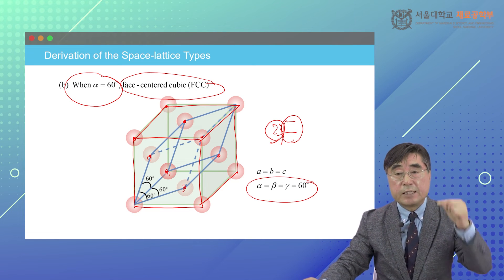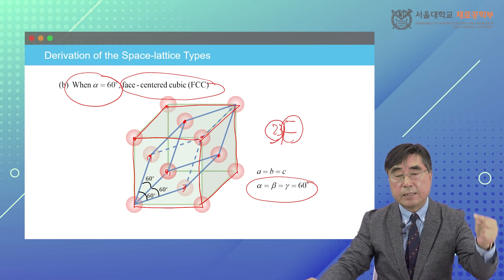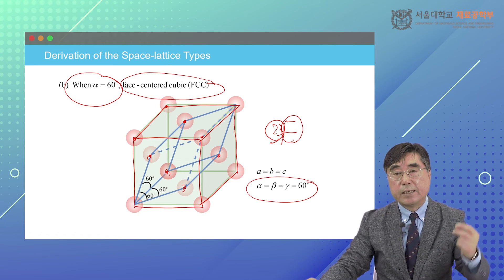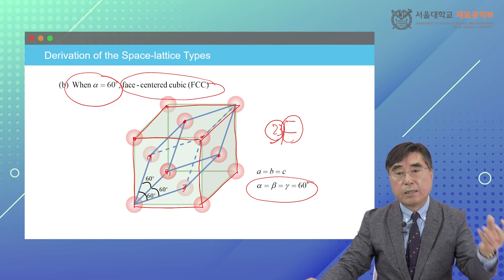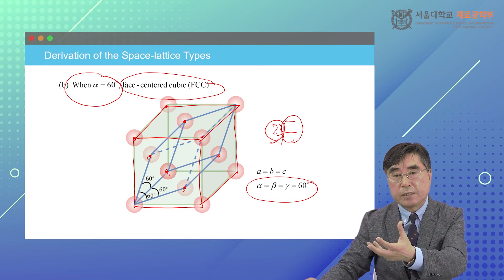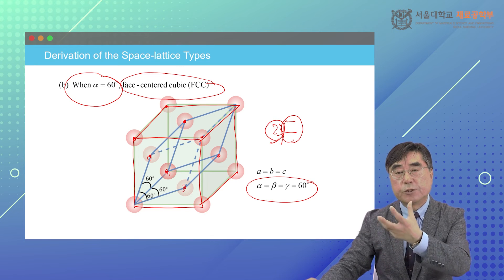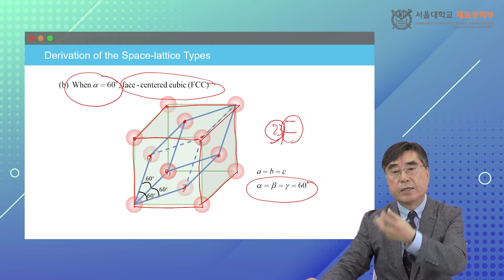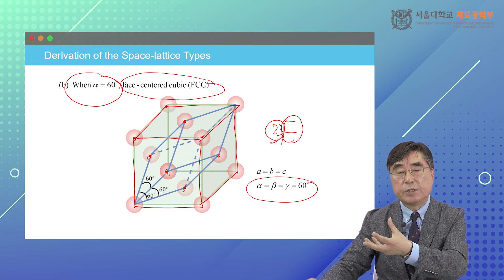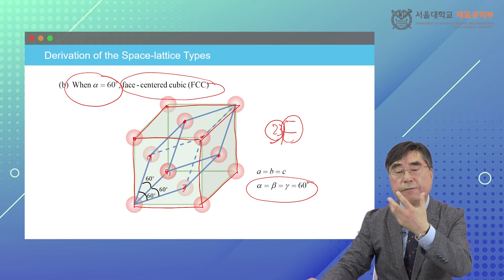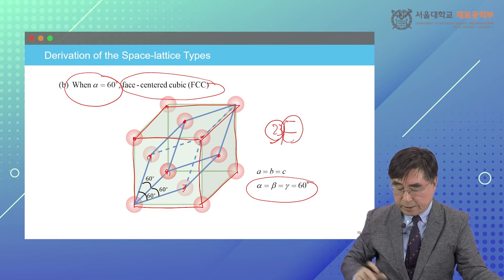This is a special type of rhombohedral crystal system where the angle is 60 degrees. Instead of defining it as rhombohedral, because it now has four 3-fold symmetry elements developed, it becomes the cubic crystal system. When you define the unit cell as cubic, you find that there are 4 lattice points in a unit cell with extra lattice points at the center of all the faces. So face-centered cubic Bravais lattice is developed.